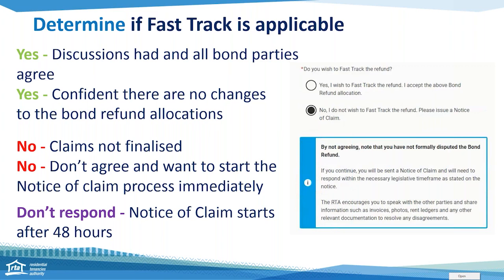The RTA automatically issues the notice of claim as soon as all responses are received. For example, if there is just one tenant and one owner, the tenant submits the refund online, the owner accesses their fast track notification email, and immediately declines the fast track process — this will start the notice of claim process because the owner is the only response required. We'll now look at responding to the fast track process, which then initiates the notice of claim.